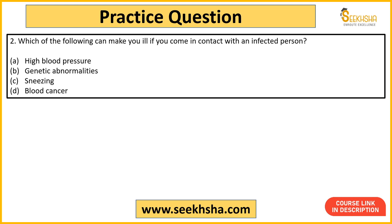Second question: which of the following can make you ill if you come in contact with an infected person? Maine directly NCRT mein se bhi kuch questions pick ki hain, aur previous year mein bhi yeh puche gaye hain. Options mein high blood pressure, genetic abnormalities, sneezing, ya blood cancer hai. Basically kaunsa disease communicable disease hai - yeh poochha ja raha hai.